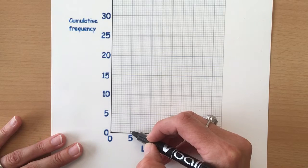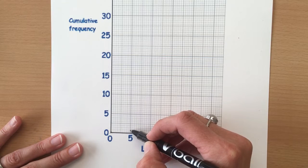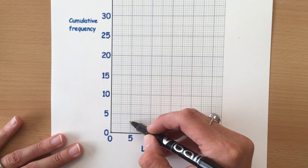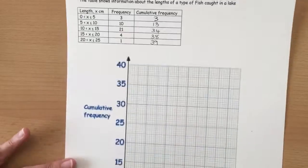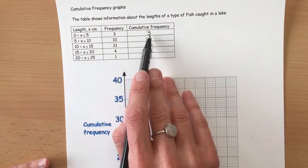Now each two of these squares is worth one, so we need to go up to six to find three. That's the first one, so between 0 and 5 it rises from 0 up to 3.